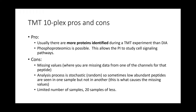The pros and cons of a TMT 10-plex: starting with the pros, there are usually more proteins identified during a TMT experiment than a DIA — you get what we call deeper depth. You can also do phosphoproteomics, which allows the PI to study cell signaling pathways because it can tell you which serines, threonines, and tyrosines are phosphorylated and which ones are not.